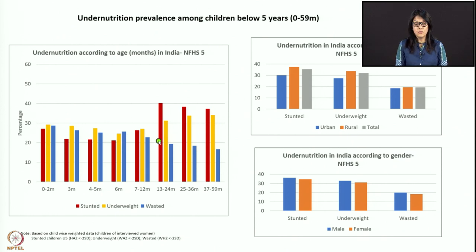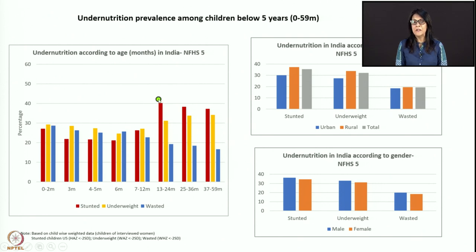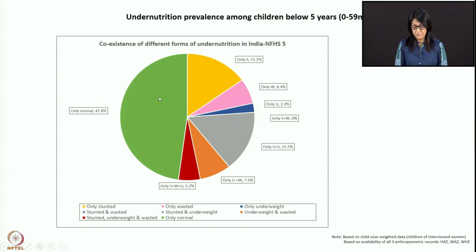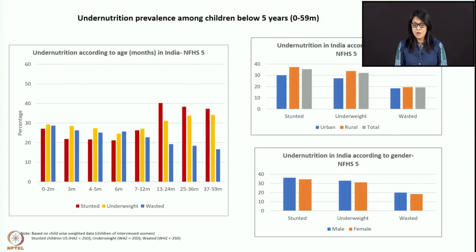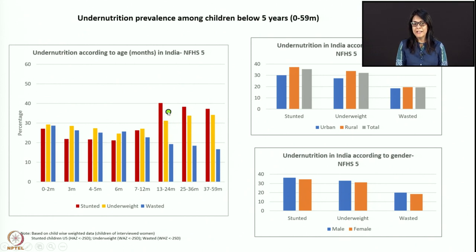From one to two years of age, stunting has literally gone from about 28 percent at zero to two months to almost reaching 40 percent — a significantly high number. This means a complete failure of the first year of life when it comes to IYCF — Infant and Young Child Feeding. Not only has maternal nutrition gone wrong, but also breastfeeding and complementary feeding. It is basically an ongoing chronic condition, and that's when you see a remarkable increase in stunting.